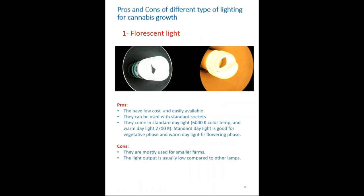Let's look at the pros and cons of different types of lighting for cannabis growth. The first type is fluorescent lighting, normally used for smaller farms. It's low cost, easily available, and can be used with standard sockets. It comes in two different color temperatures: 6000K standard daylight, which is good for the vegetative phase, and 2700K warm daylight, which is good for the flowering phase. The cons are that it's used mostly for smaller farms and has lower light output compared to other lamp types.